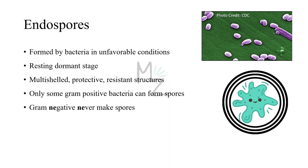Gram-negative bacteria never make spores. I've got a connecting mnemonic: 'negative' and 'never' — both start with 'n.' As you can see, these are the endospores in a microscopic picture. They're round, bright, refractile structures.